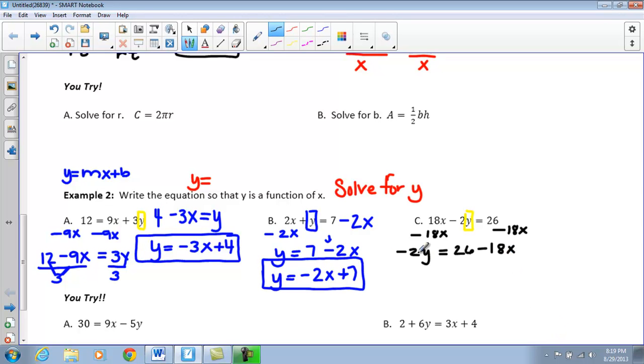The next thing I am going to do, I still want to get that Y by itself. So, I am going to divide everything through by a negative 2. Now, once again, we need to make sure that we divide this by negative 2 and the negative 18 by negative 2. So, here I have Y equals negative 13 plus 9X.